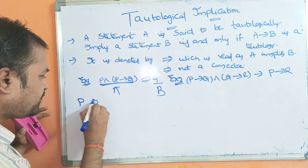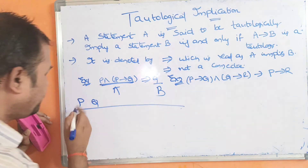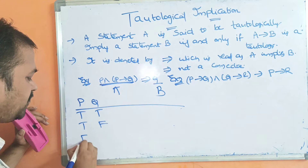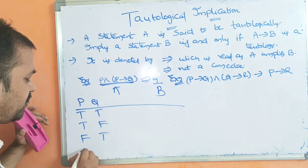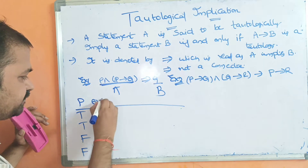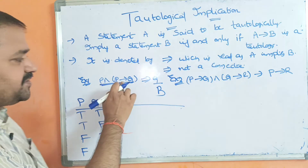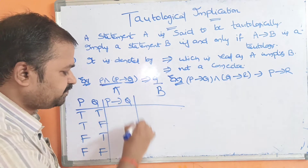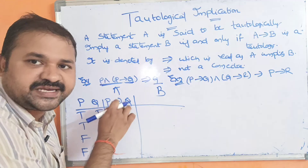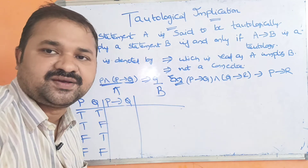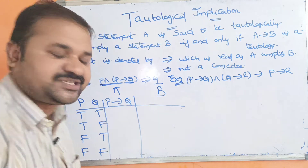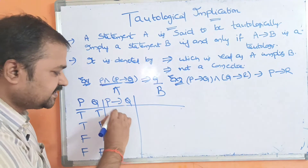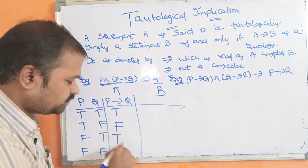Here we have two propositions, so the number of possible combinations is four: TT, TF, FT, FF. First, we compute P→Q. When P is true and Q is false, the result is false; otherwise the result is true. So for TT→T, TF→F, FT→T, FF→T.